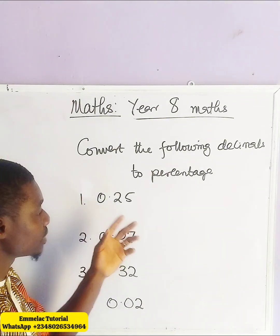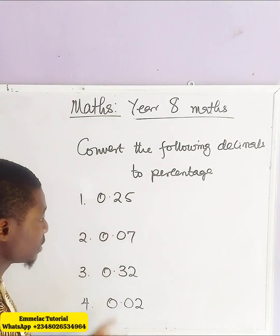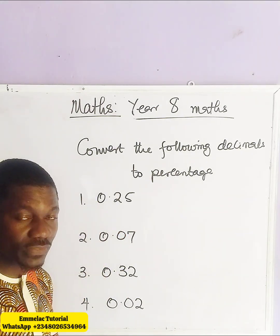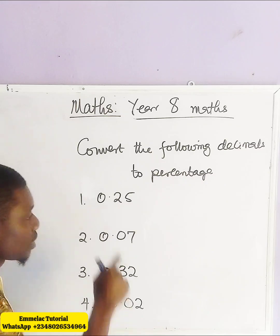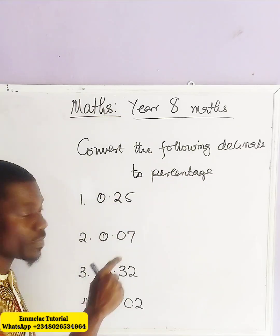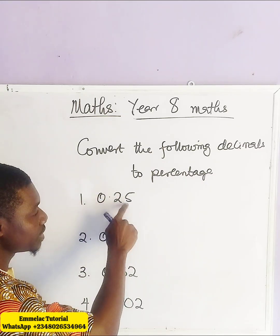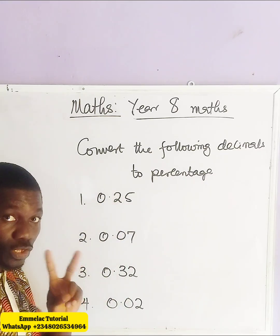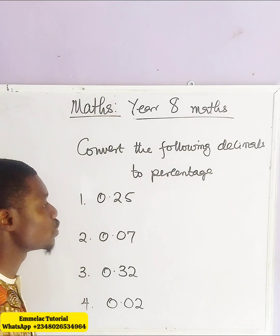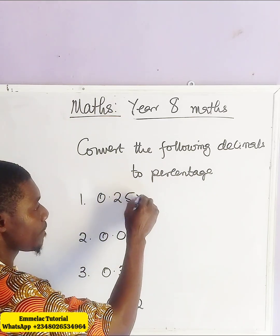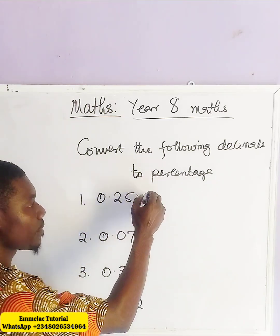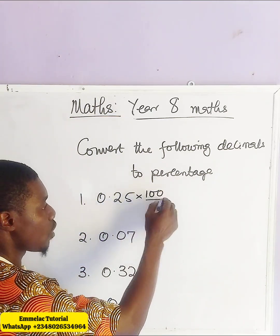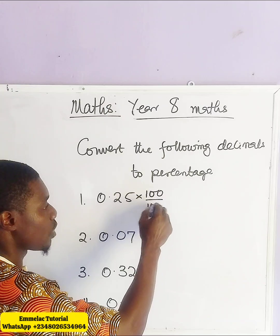Now how do you convert decimals into percentages? First of all, how many digits do you have after the decimal? Two. So you multiply this by 100 over 100.